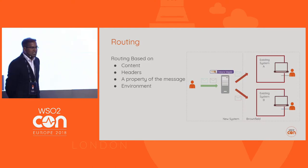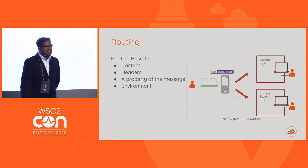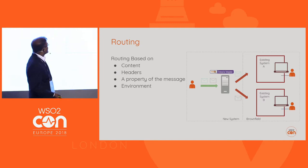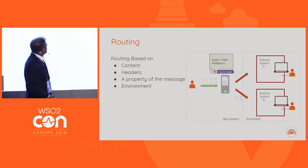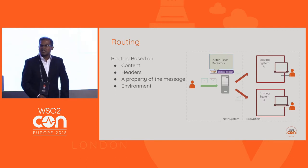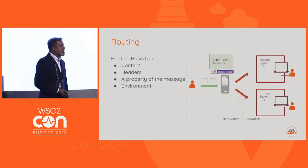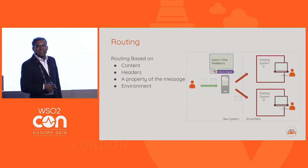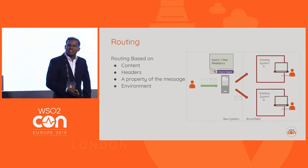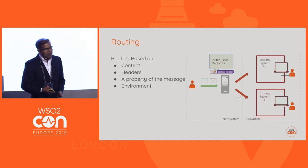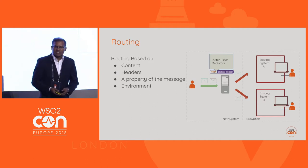And then we have the message routing requirement. Here we can use the Enterprise Integrator to perform message routing based on the content of the message, headers, or a property, or based on environment. To perform message routing, we have two mediators. The Filter mediator provides if-then-else functionality — we can evaluate a header or content and route the message to system A or system B. The Switch Case mediator is similar to the switch-case construct in a programming language, allowing us to branch to multiple cases.